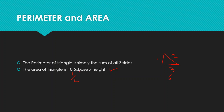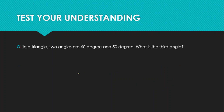Usually the base is easy to recognize, but the height can sometimes be difficult, especially if we have an obtuse triangle where it falls outside. In that case, it is better to extend the triangle to find the height. The area of the triangle is 0.5 multiplied by base multiplied by height.